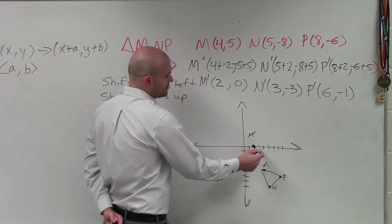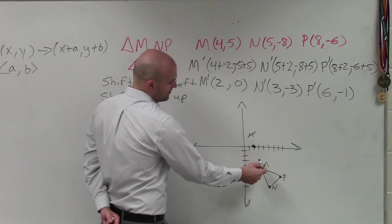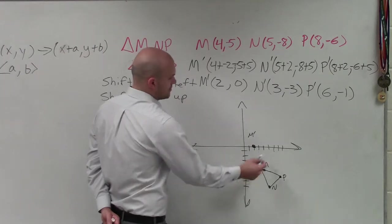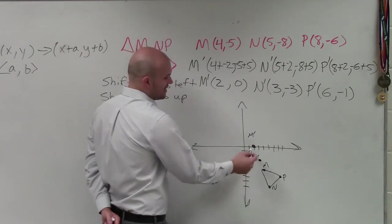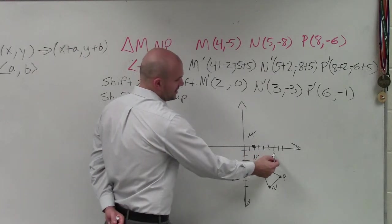So from M, I now have the point 2 comma 0. N is going to be 1, 2, 3, negative 3. And P is now 6, negative 1.